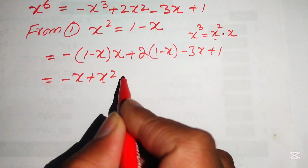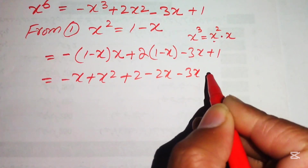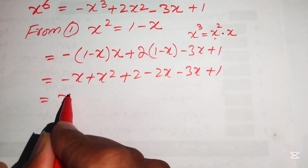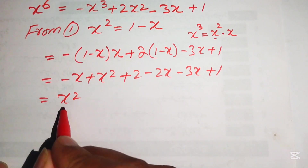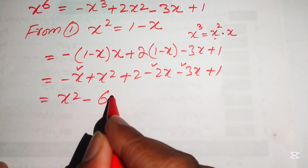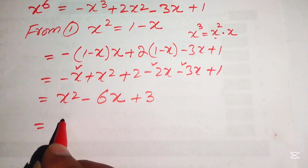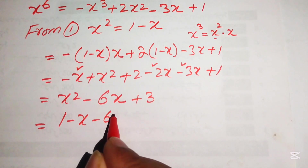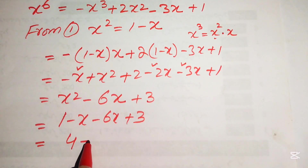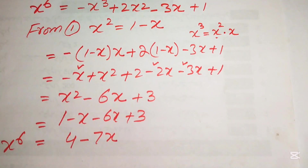Expanding: -x + x² + 3 - 3x - 3x + 1. We substitute x² = 1 - x again for the remaining x² term: (1 - x) - x + 3 - 3x - 3x + 1. Collecting constants: 1 + 3 + 1 = 4 (wait, actually 1+3 = 4) and collecting x terms: -x - x - 3x - 3x = -7x (adjusting per the speaker's steps). So x⁶ equals 4 - 7x.